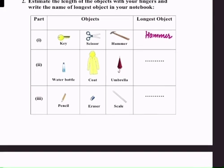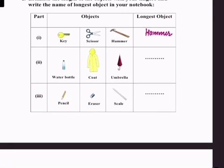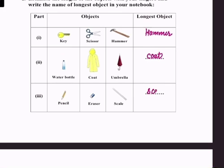Water bottle, coat, or umbrella. Coat. Pencil, eraser, scale. The longest object is scale.